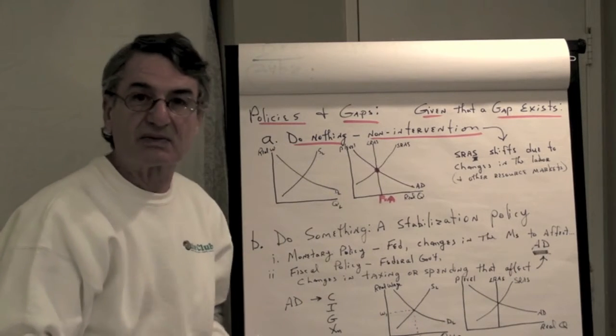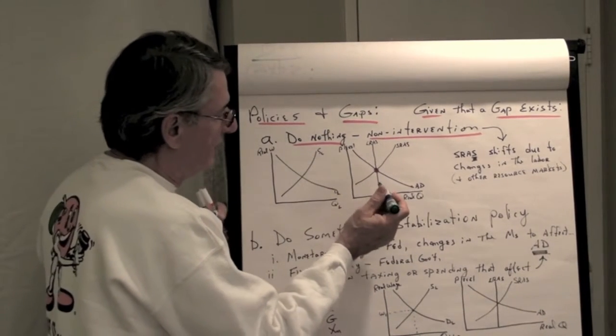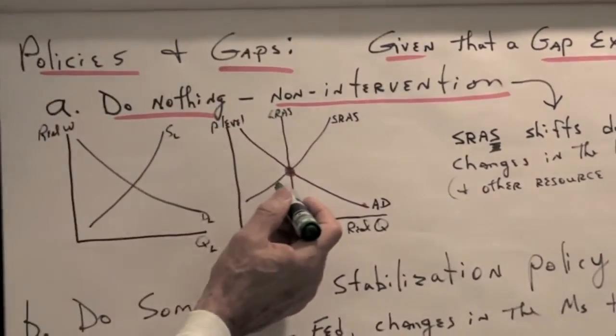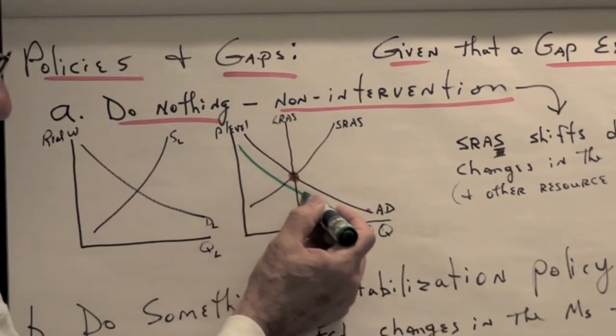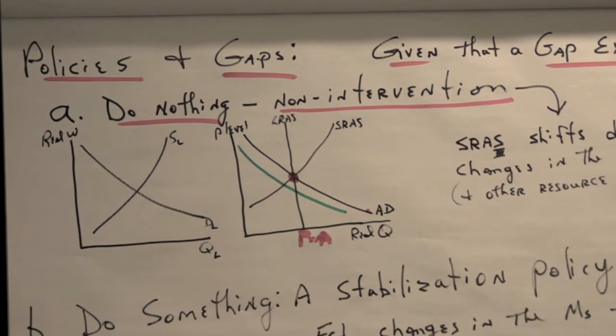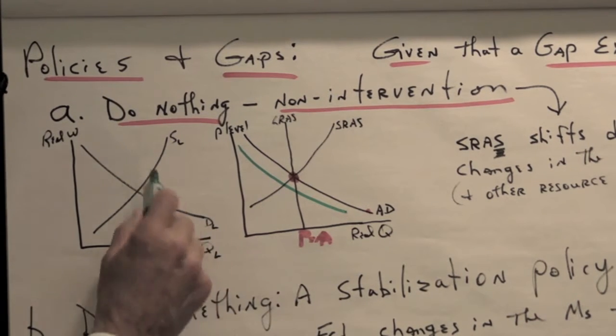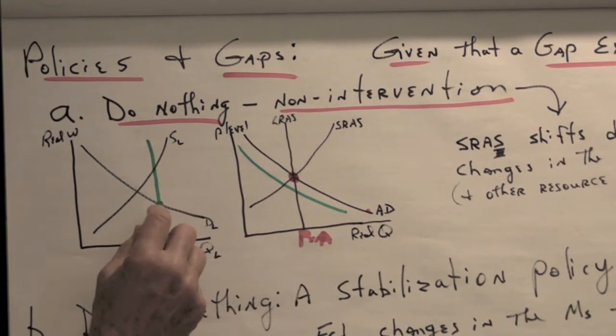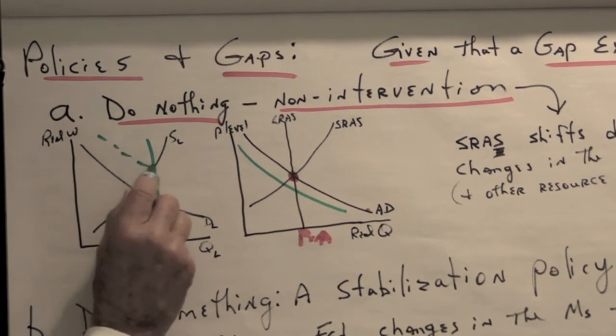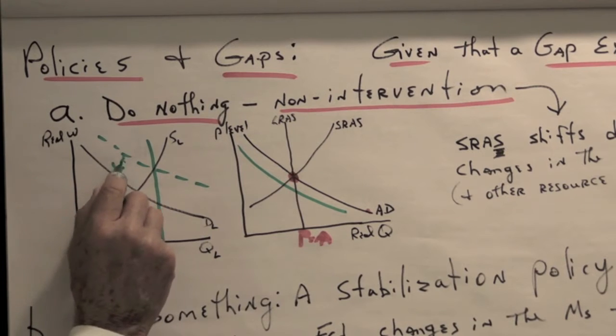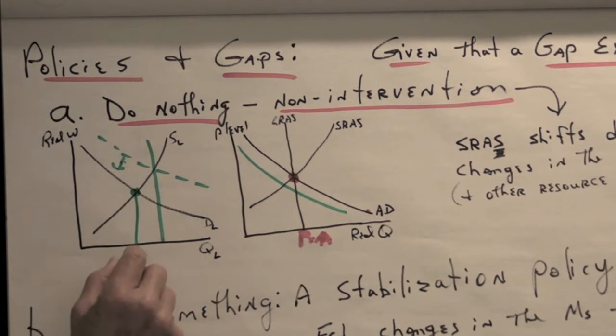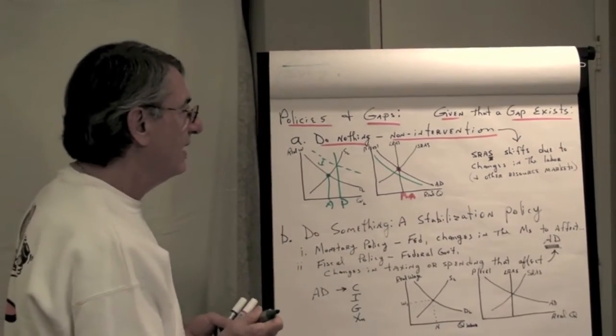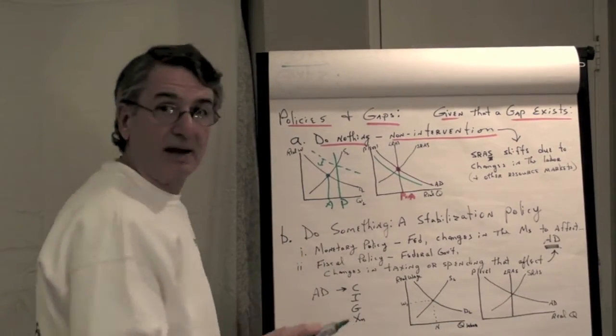But then, as we've seen recently with the crash of the financial system, what happened was aggregate demand decreased. And all of a sudden, we had this kind of a situation. I'll draw it fresh here. We were here, and then aggregate demand decreases. And all of a sudden, our actual level of output is less than potential. And so we have a recessionary gap.